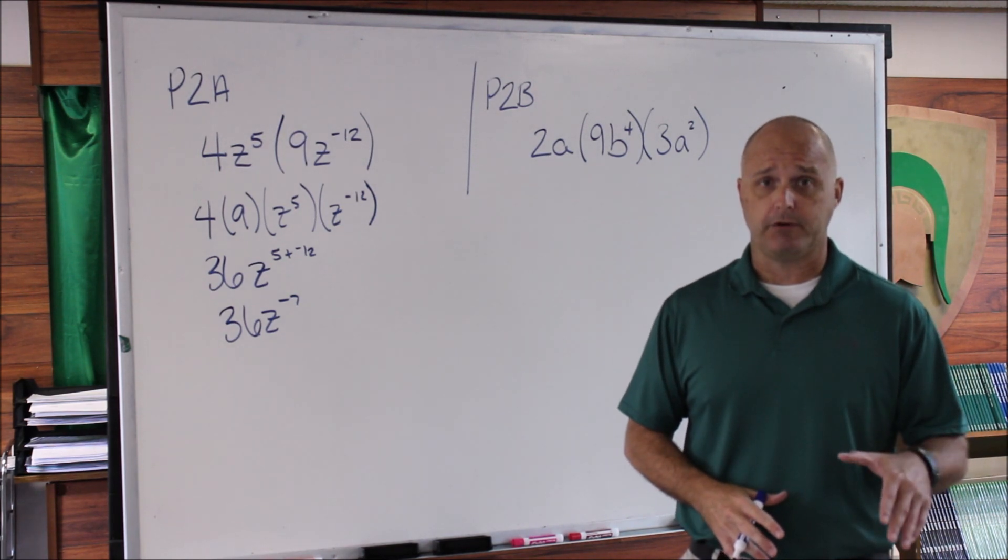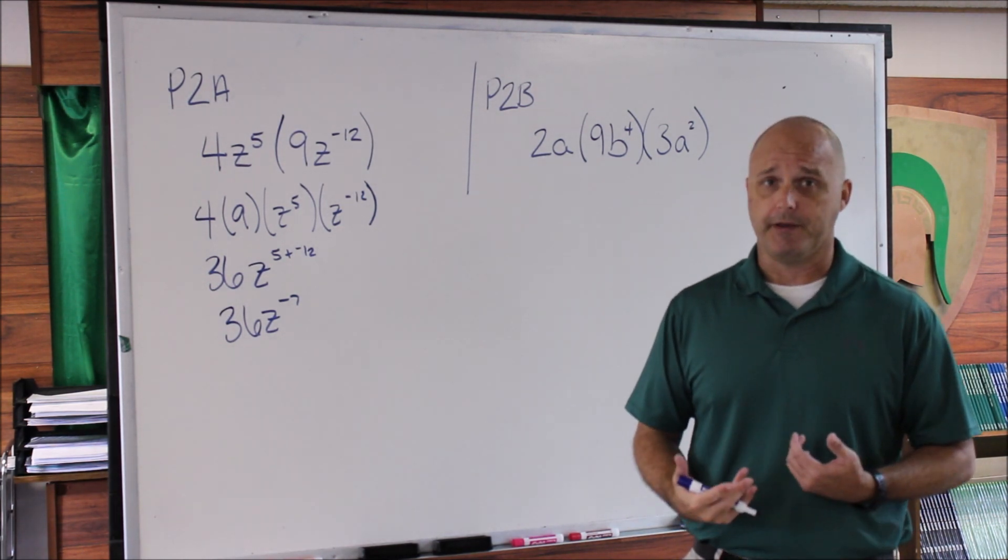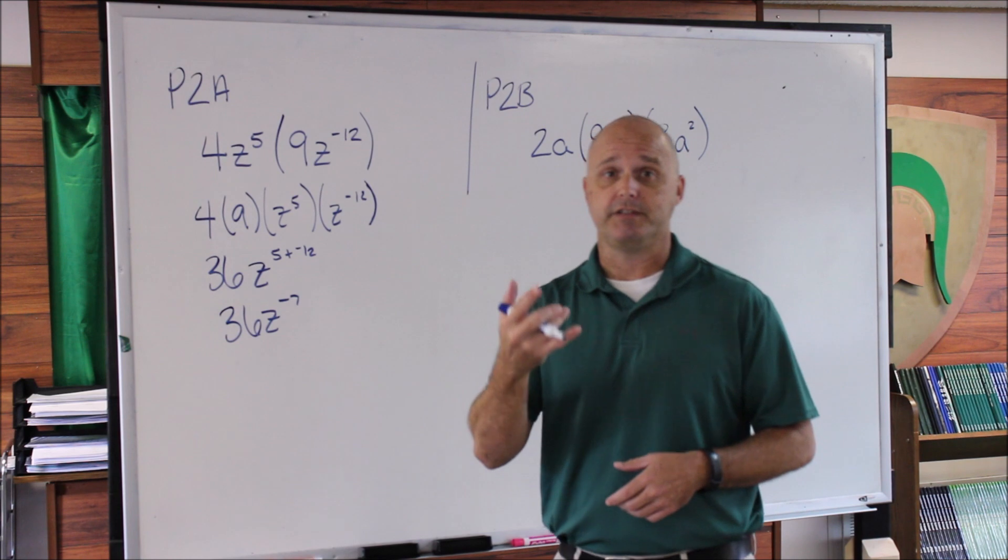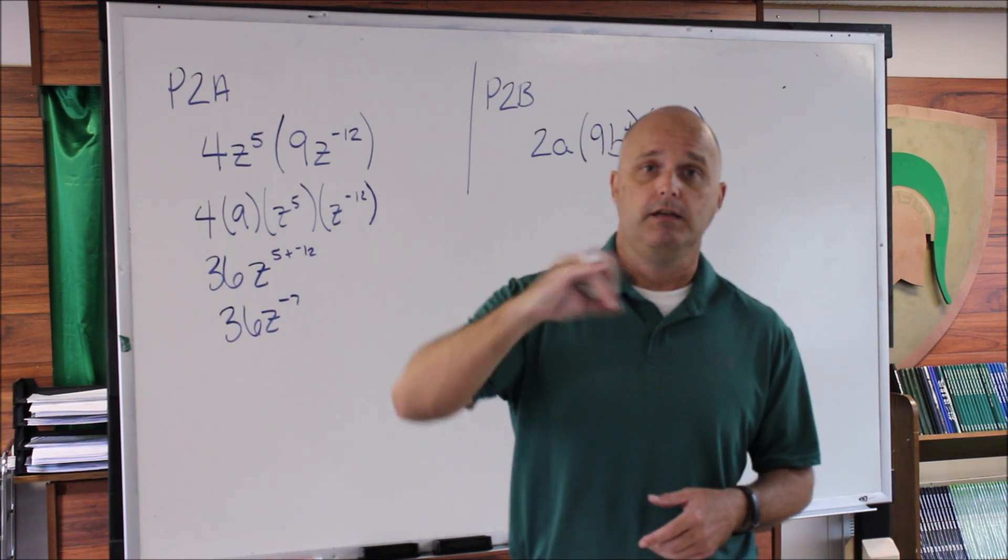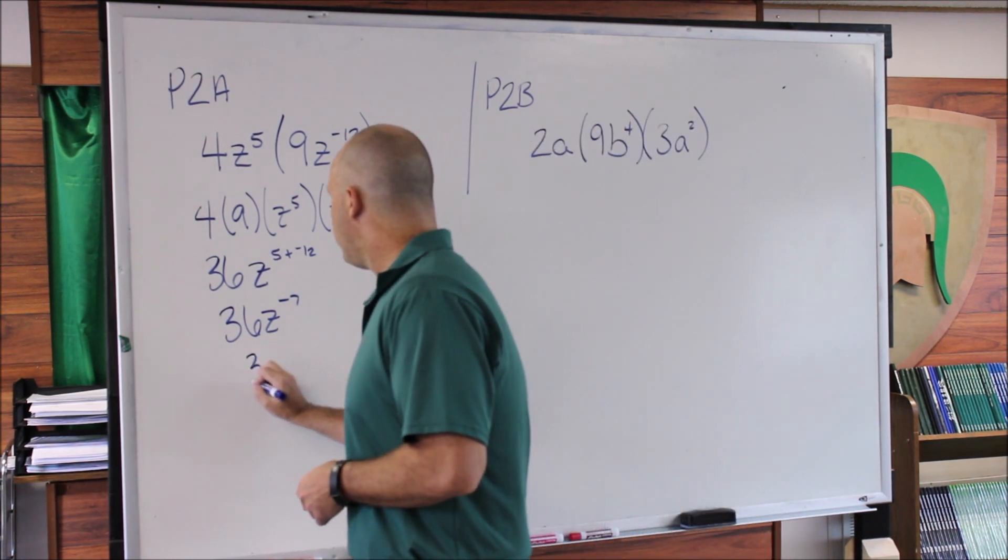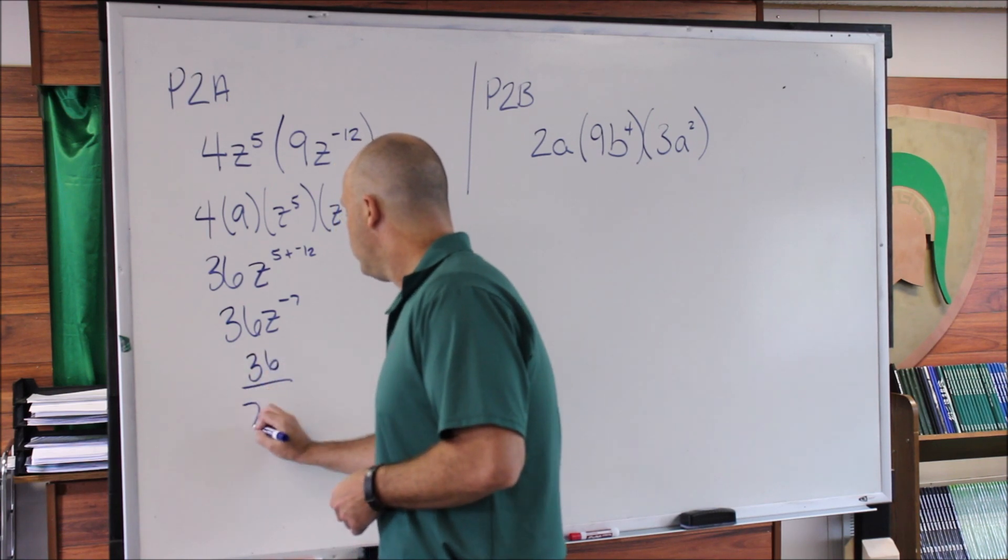I can't just leave that negative exponent there. I've got to do something with it. What that tells me to do is take that base of z and drop it down into the denominator. So this becomes 36 over z. Remember that once we've dropped our base down,